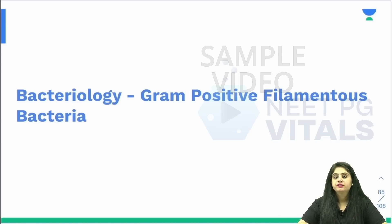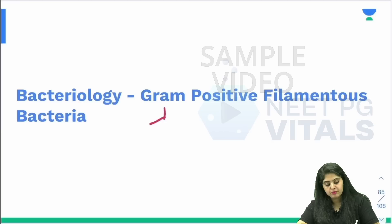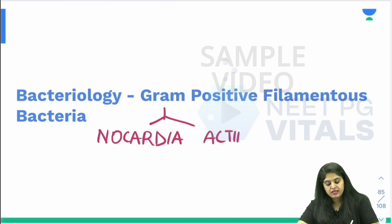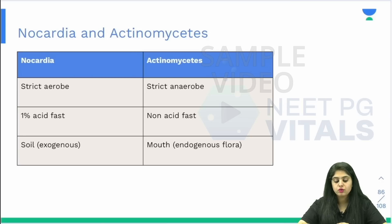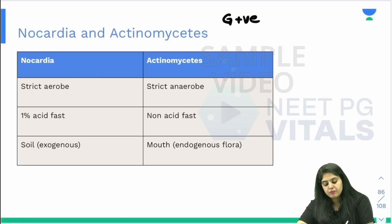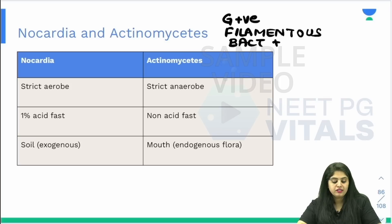The next group of organisms we are going to discuss are the gram-positive filamentous organisms. There are two that come under it: number one, Nocardia, which is very important, and the other one is Actinomyces. There is a way of learning both of these — I have tried to make a short story around both so that it becomes very easy to learn. First I will tell you the theory, then we will move to the mnemonic. So first, let's talk about the theory of Nocardia.